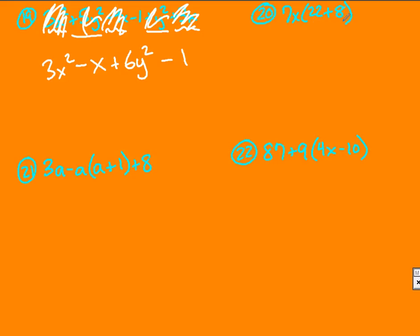Number 20, I can distribute through or I can see, well hey, these are like terms. I can combine them immediately. So now I just have 7x times 30, which would be 210x.